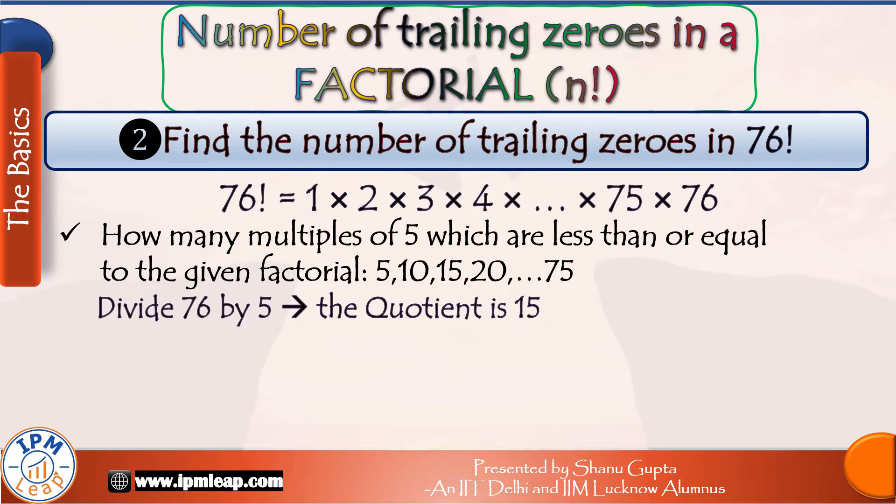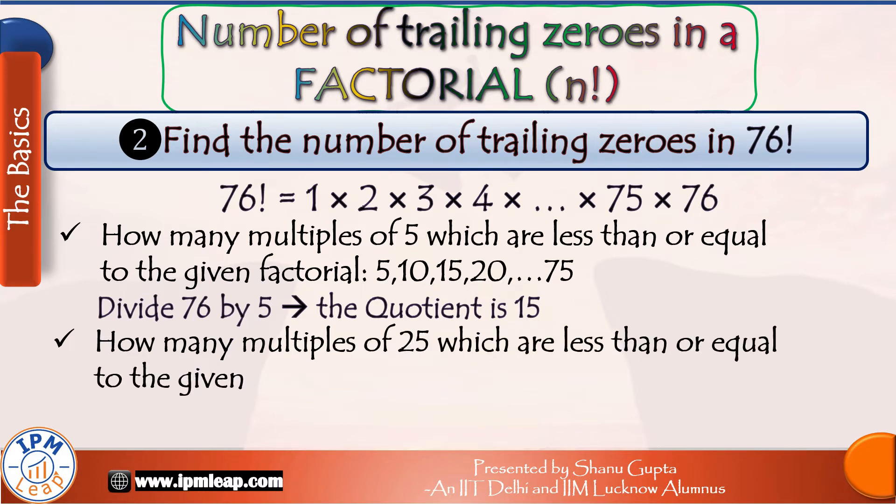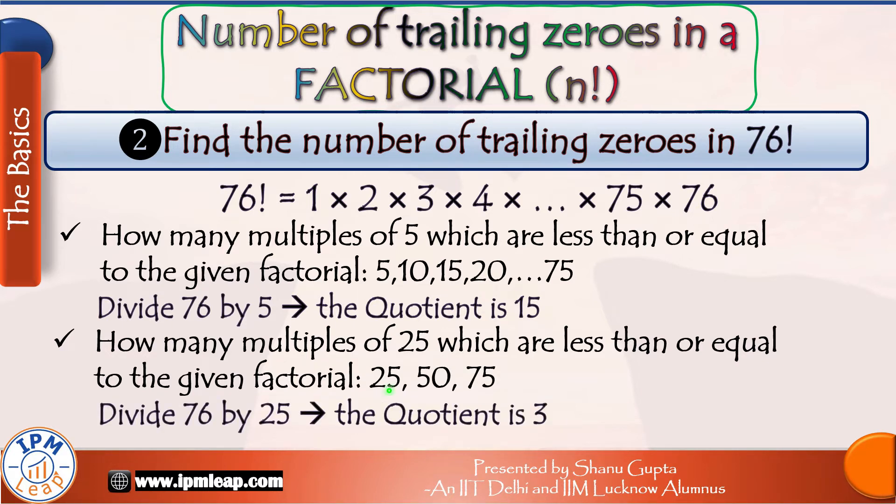Additionally, don't forget that if there are 25s in this product, each of those will contribute an extra power of 5 because 25 is 5^2. How many multiples of 25 which are less than or equal to the given factorial? Only 3 of them: 25, 50 and 75. Alternately, if we divide 76 by 25, the quotient is 3 which means 3 multiples of 25. We get 3 extra 5s. How many total 5s? That would be 18 and there would be as many 10s in 76 factorial, 18 tens. So the number of trailing 0s will be 18.